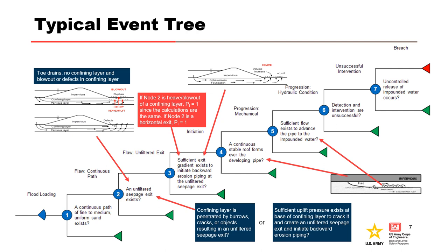Nodes 1 and 2 are a reordering of the generic event tree to allow pruning sooner if geologic conditions or material susceptibility do not exist, or a filtered exit exists. For horizontal exits, the probability of initiation equals 1, since it just takes a gradient to detach soil particles at the seepage exit. Teams may also reverse the order of nodes 4 and 5 because the pipe will not be developing unless the hydraulic conditions for progression are present.